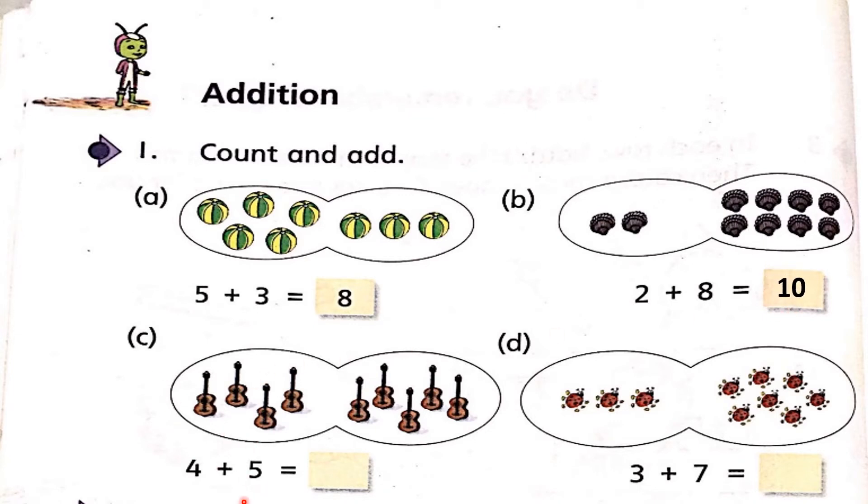In part C, 4 plus 5. 5 guitars are here on my right hand side and 4 here. Start counting after 5: 6, 7, 8, 9. So, write number 9 here.